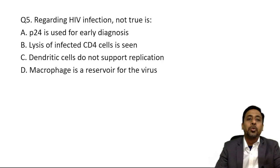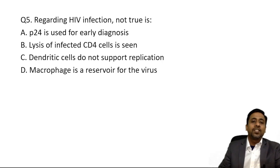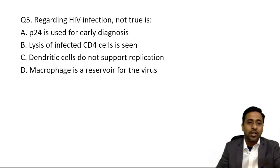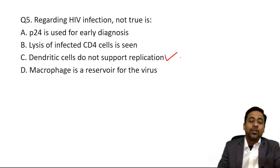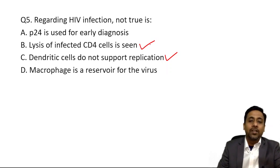Regarding HIV — which is not true: P24 antigen is used for early diagnosis; lysis of infected CD4 cells is seen; dendritic cells do not support replication; macrophage is a reservoir for the virus. Follicular dendritic cells, though they lack CD4, do support HIV replication. So the statement 'dendritic cells do not support replication' is incorrect — answer C.